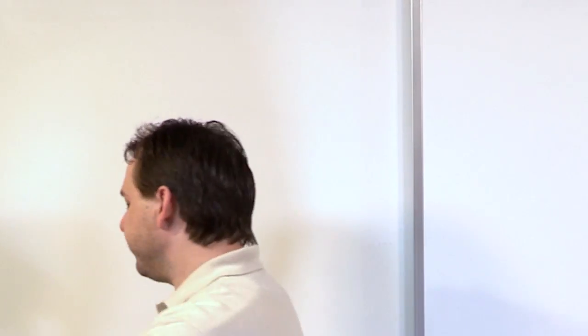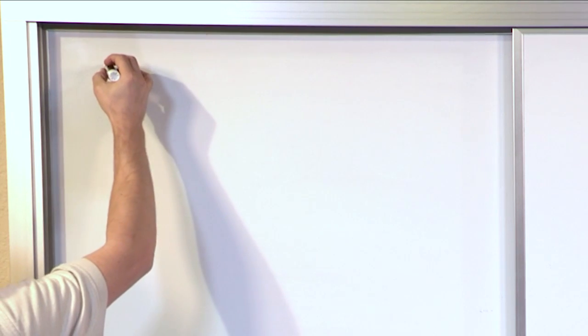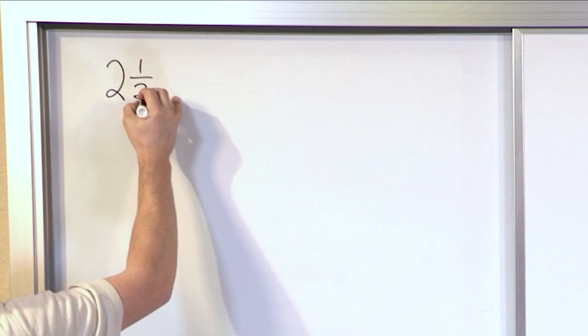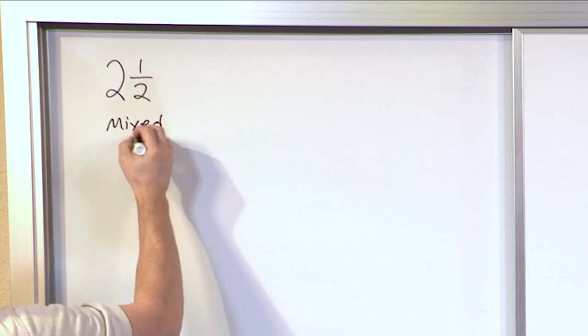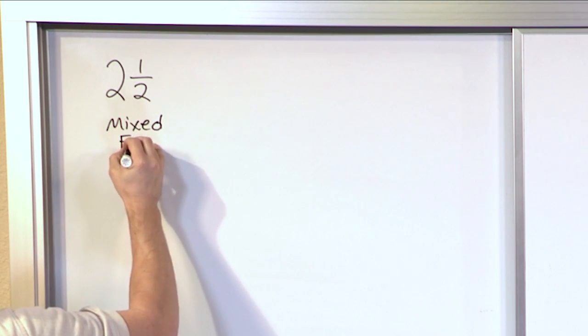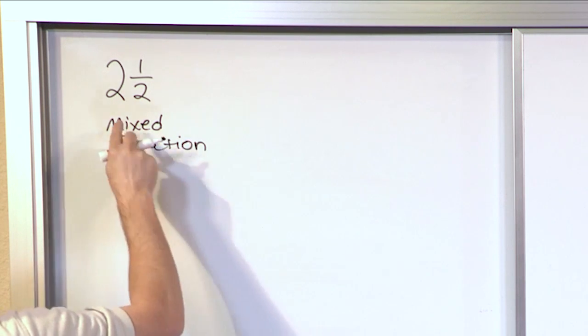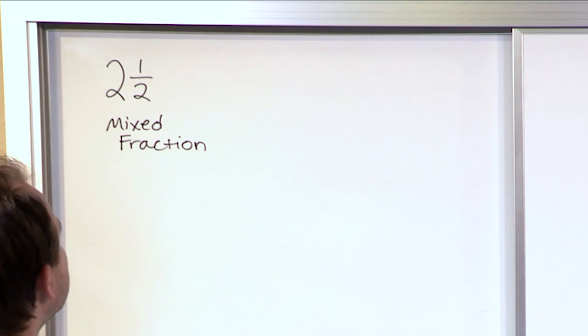Let me explain a little bit about what that means first of all. A mixed fraction would be something like 2 1/2. That's what we call a mixed fraction. It means we have two pies plus another 1/2 pie.